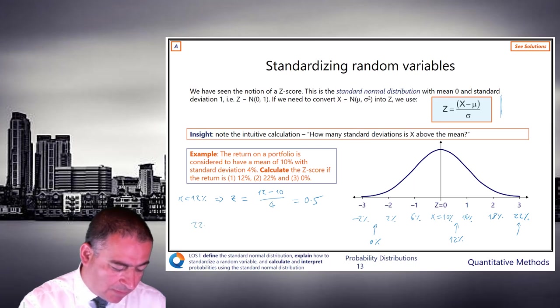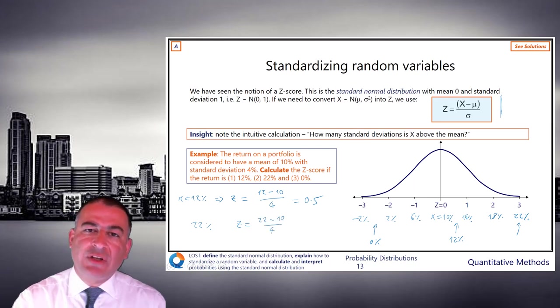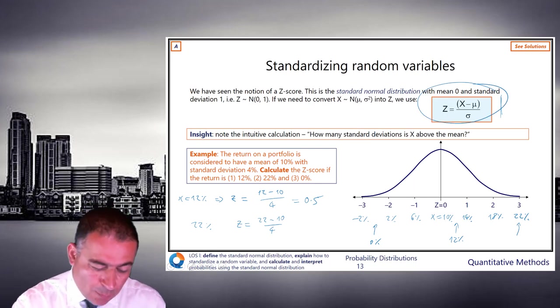Second one, we've got 22%. So this time, z is going to be 22 minus 10 divided by 4. Can you see it's the same calculation in all cases, all doing is changing the x in this top right formula.